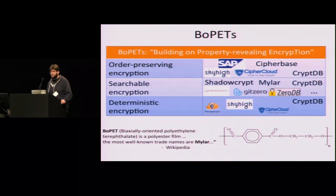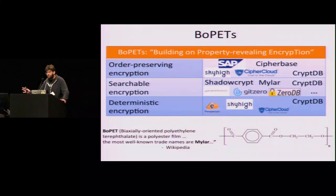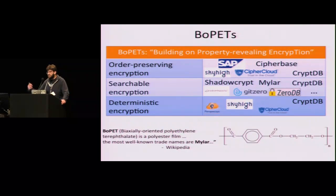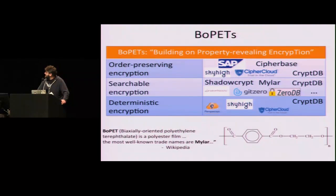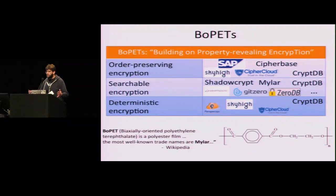Just to give you a sense of the interest in BOPETS: if you look at all the startups in this table, they cumulatively have received about $200 million of VC funding from firms like Andreessen Horowitz, Sequoia, and Greylock. So there's a palpable interest — a lot of people are really interested in these systems.